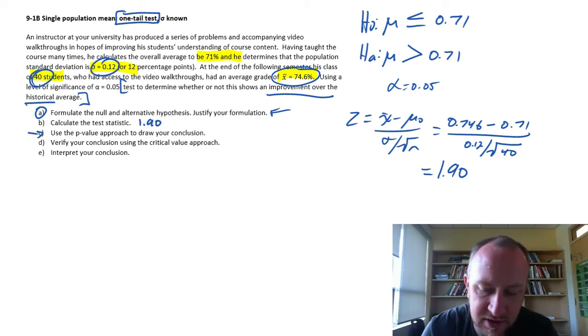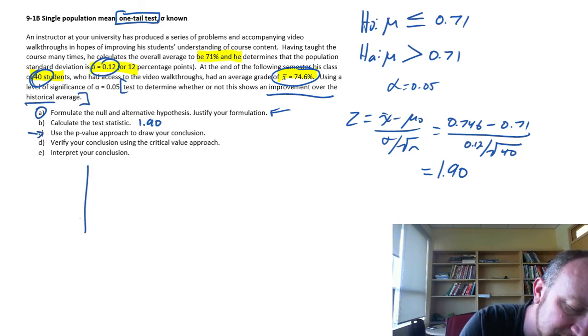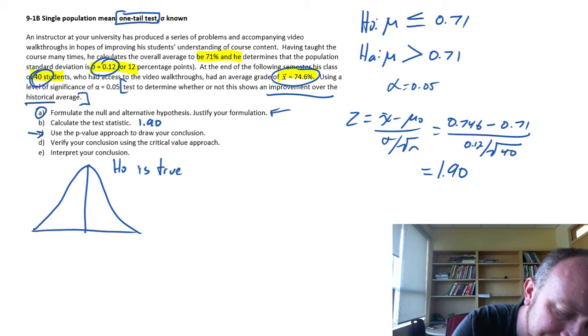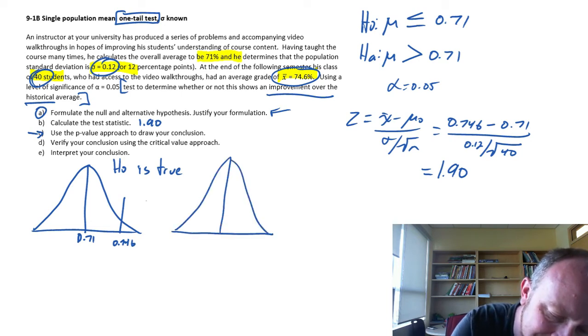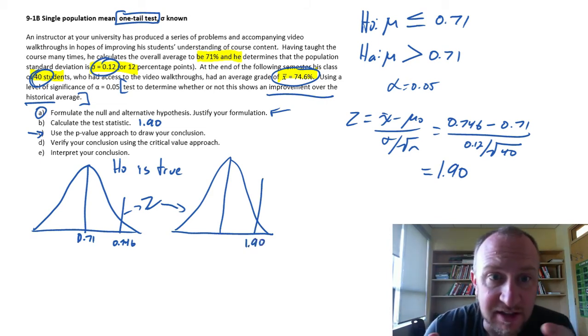Use the p-value approach to draw your conclusion. Now we need to go to our tables and calculate the probability that corresponds to that. Very quickly, here's what we're doing. This is that hypothesis under the assumption that the null is true. From there this was 0.71. From there we took a sample with a mean of 0.746. We standardized that into a z-score that now has a value of 1.90.